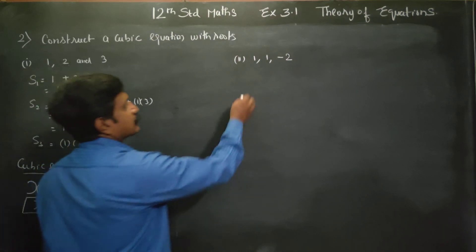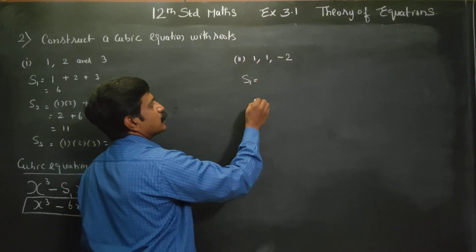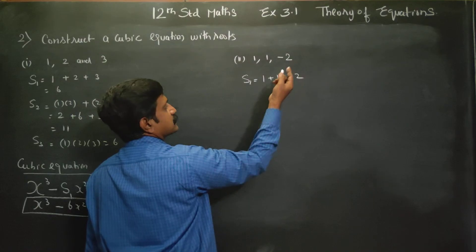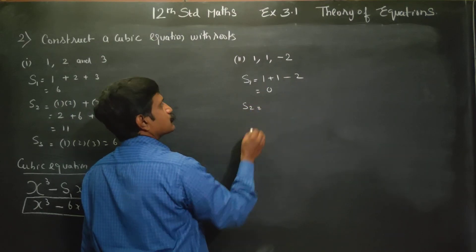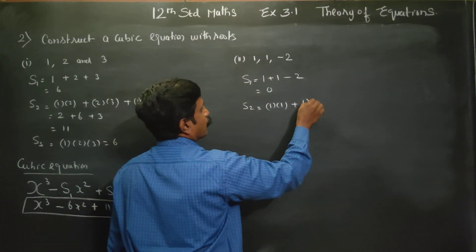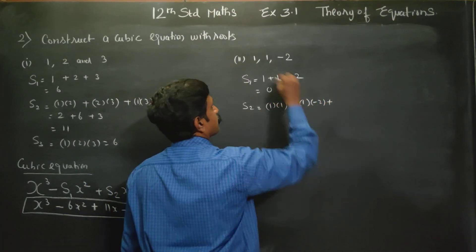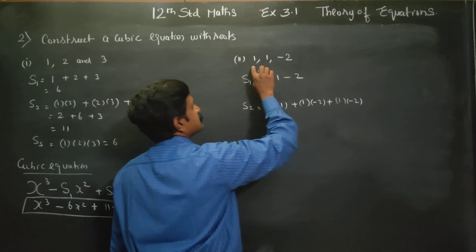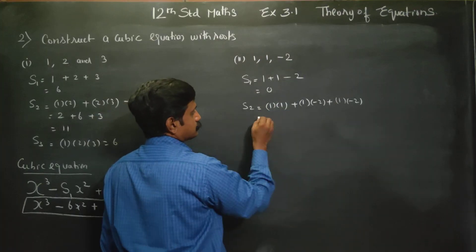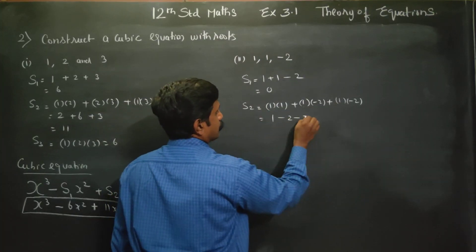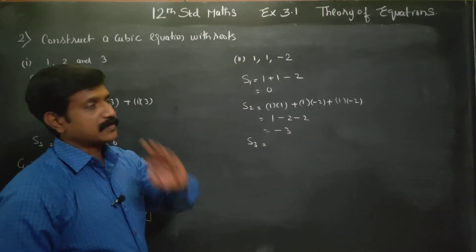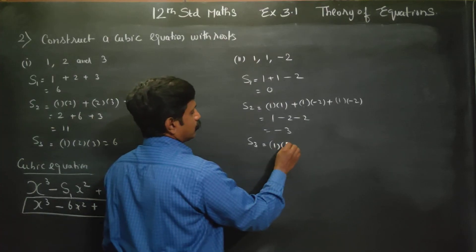Now for the second example: finding s1 — summation of one root at a time. The roots appear to include 1, 1, and minus 2, so s1 = 1 + 1 + (minus 2) = 0. For s2, two roots taken at a time: (1×1) + (1×minus 2) + (1×minus 2) = 1 minus 2 minus 2 = minus 3.